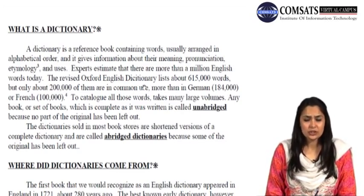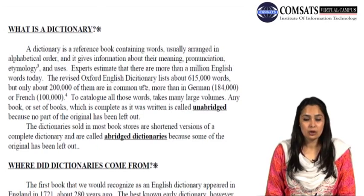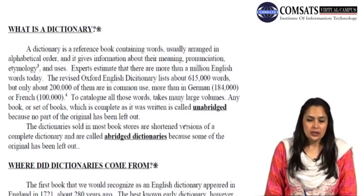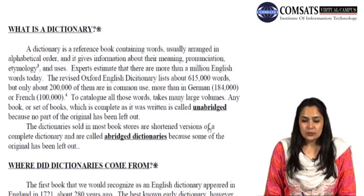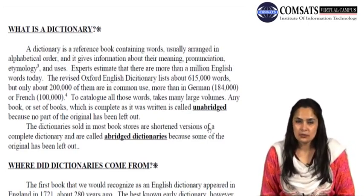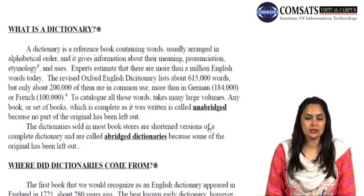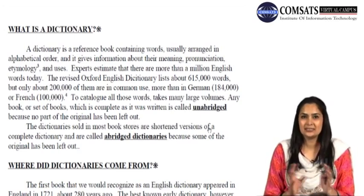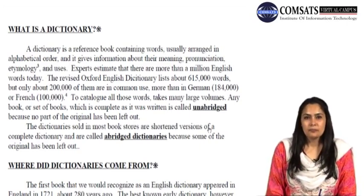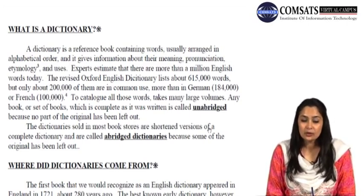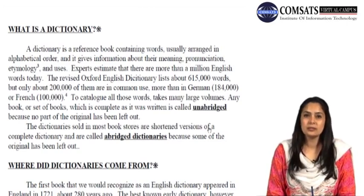The revised Oxford English Dictionary lists about 615,000 words, but only about 200,000 of them are in common use — more than in German and French. To catalog all those words takes many large volumes. Any book or set of books which is complete as it was written is called unabridged because no part of the original has been left out. This is the difference between abridged and unabridged dictionaries. The dictionaries sold in most bookstores are shortened versions called abridged dictionaries because some of the original has been left out — some portion has been taken out from the original.